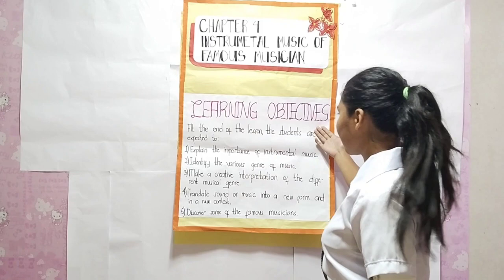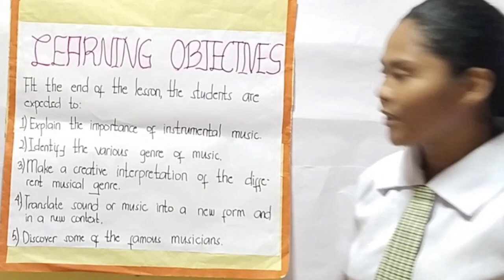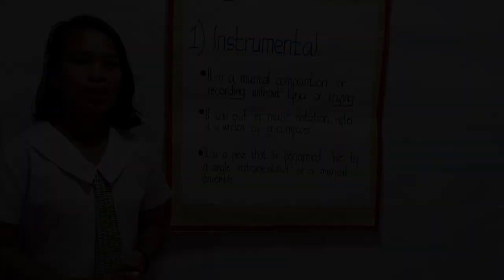But before that, let me introduce our learning objectives. At the end of the lesson, the students are expected to: first, explain the importance of instrumental music; second, identify the various genres of music; third, make a creative interpretation of the different musical genres; fourth, translate sound or music into a new form and in a new context; fifth, discover some of the famous musicians.